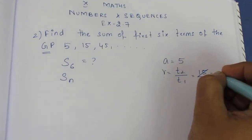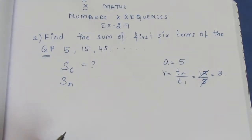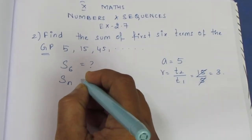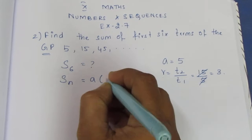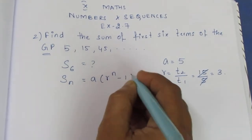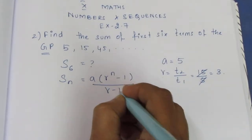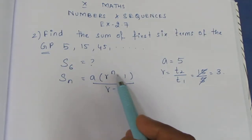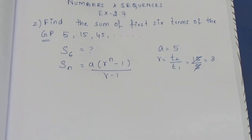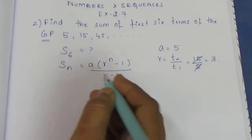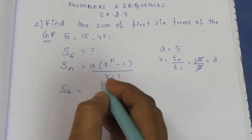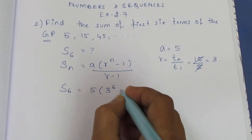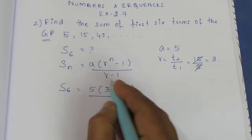So R is equal to 3. Now, to find S6, we use the Sn formula. The formula is Sn = a(R^n − 1) / (R − 1). Substituting, S6 = 5 × (3^6 − 1) / (3 − 1).